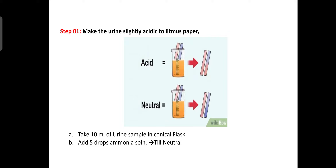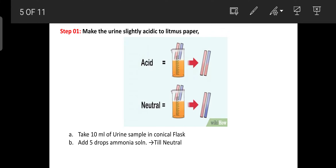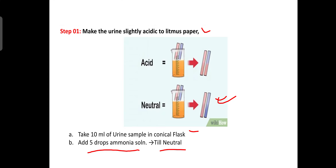Procedure Step 1: Take 10 ml of urine sample in a conical flask. Add five drops of ammonia solution until the urine becomes neutral. Check with litmus paper — if it turns violet, the urine is completely neutral. Then proceed to step two.